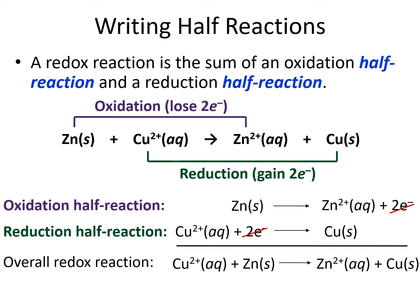After crossing off the two electrons on each side, we just bring everything down into our overall equation. We've got copper 2+ aqueous and zinc solid on the left sides of arrows, so we bring those down. On the right sides of our arrows, we've got zinc 2+ aqueous and copper solid, so we bring those down. We end up with basically the same equation we started with. Don't worry, there's a point to all this.